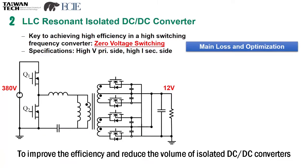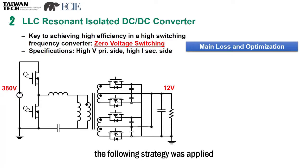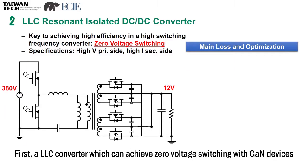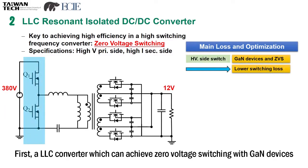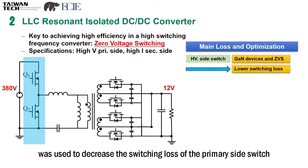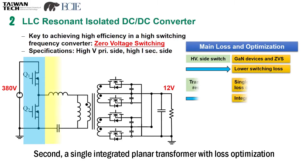To improve the efficiency and reduce the volume of isolated DC-DC converters, the following strategies were applied. First, an LLC converter which can achieve zero voltage switching with GaN devices was used to decrease the switching loss of the primary side switch.